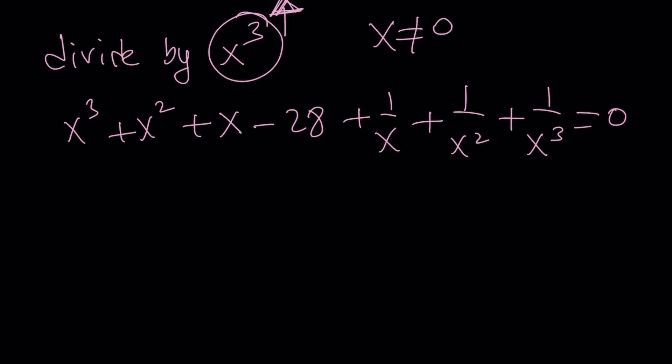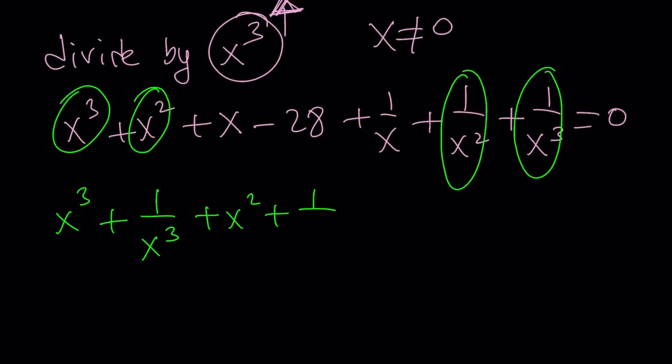Now, we got a really nice equation. And you know why? Because we can go ahead and pair these terms up. That's what is really cool about symmetrical equations. So we take this with that. That gives us x cubed plus 1 over x cubed, which is nice. And then we take x squared with 1 over x squared. Notice how the terms get together. And then we have x plus 1 over x, which is super duper nice again. And then finally, minus 28 equals 0.